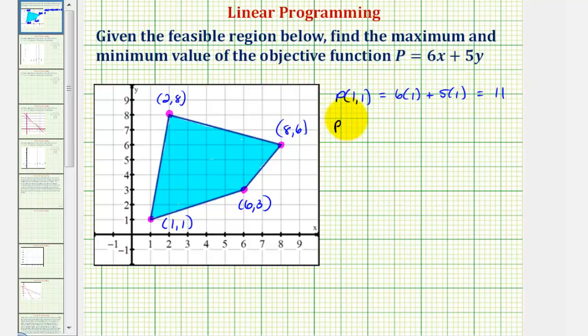Next we'll find P(6, 3), so we'll substitute 6 for x and 3 for y. We have 6 times 6 plus 5 times 3, which would be 36 plus 15, which equals 51.